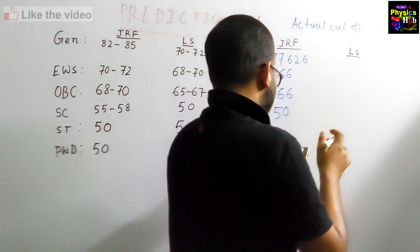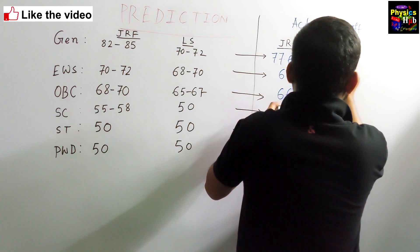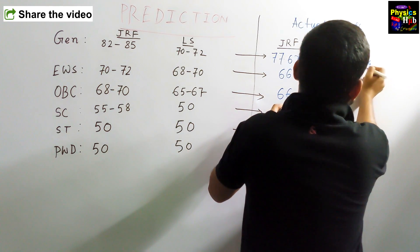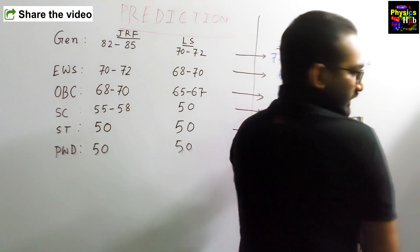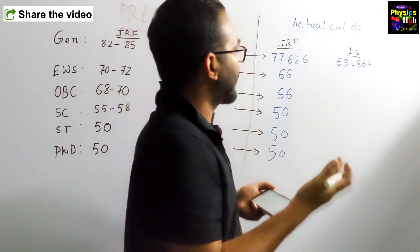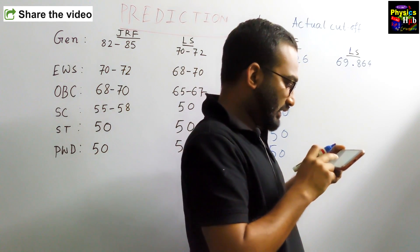And for this LS, for general LS, it is 69.864. I am writing out of 200. In the cutoff it is given a percentage means out of 100. What I am writing out of 200, so that you get it easy to understand it.